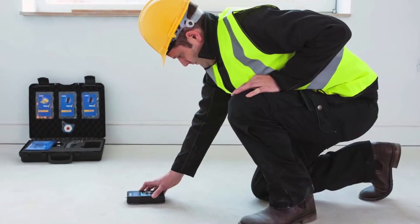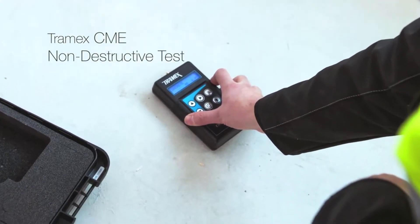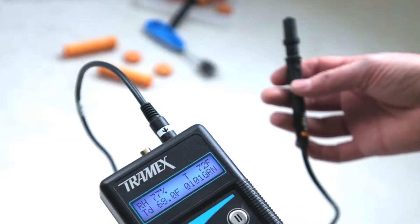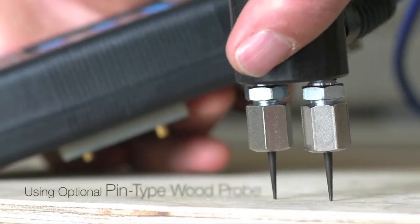The system involves testing the subfloor using both the Tramex CME Non-Destructive Test and In-Situ Relative Humidity Hygroi probes. The ambient conditions of the building are also measured and the moisture condition of many floor coverings can be checked.